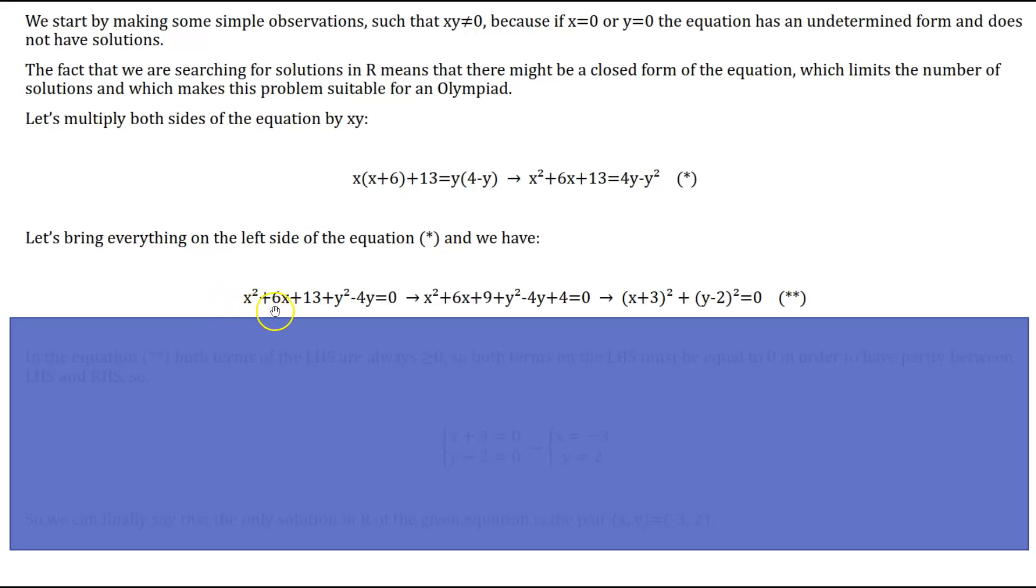We should complete the square for x and y. We have x² + 6x + 9 + y² - 4y + 4 = 0. If we factorize and complete the squares for both factors, we have (x+3)² + (y-2)² = 0. This is the closed form that we were talking about initially.